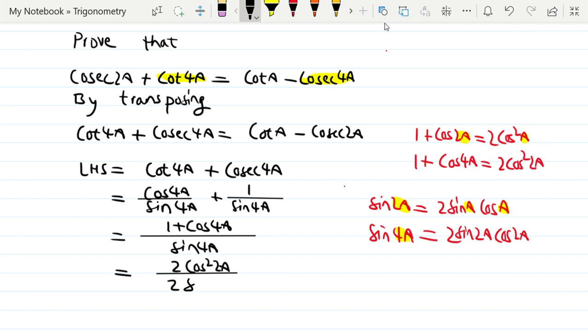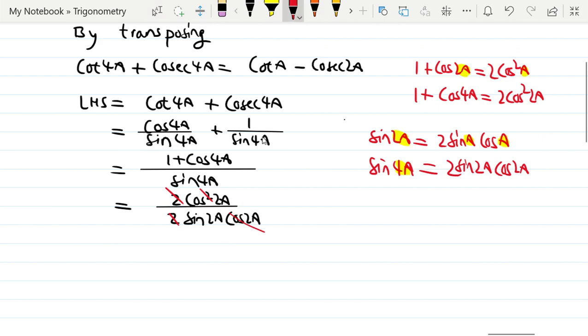So 2sin2A·cos2A. This is the same, so cos2A cancels out. Equal to 2cos²A divided by cos2A over sin2A, so equal to 2cos²A divided by sin2A. So we've proved cot2A, which is cotA minus cos2A.